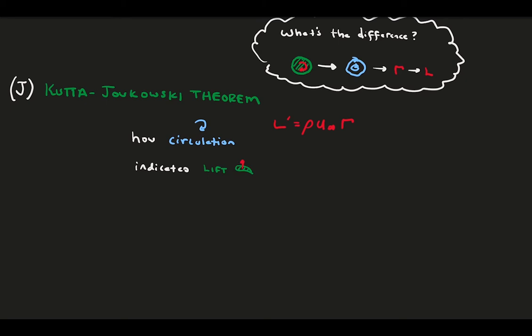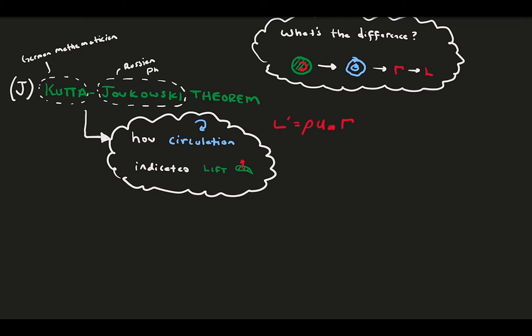So circulation added to a flow indicates lift. Interestingly, this relation was found independently by Kutta, a German mathematician, and Joukowsky, a Russian physicist, at the turn of the 20th century. So they have to share the glory.